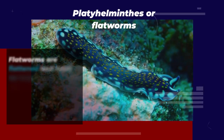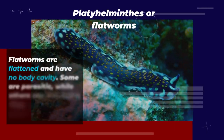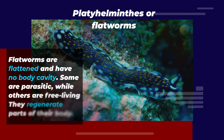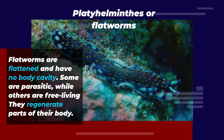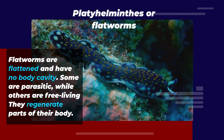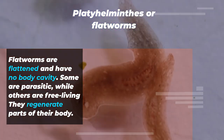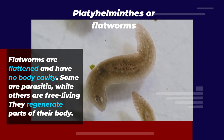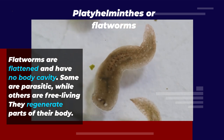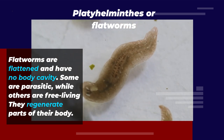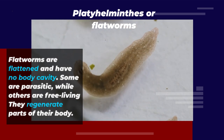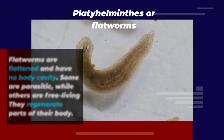The third phylum we'll be looking at is Platyhelminthes, or flatworms. Flatworms are flattened and have no body cavity. Some are parasitic while others are free-living. They have a simple nervous system and can regenerate parts of their body.